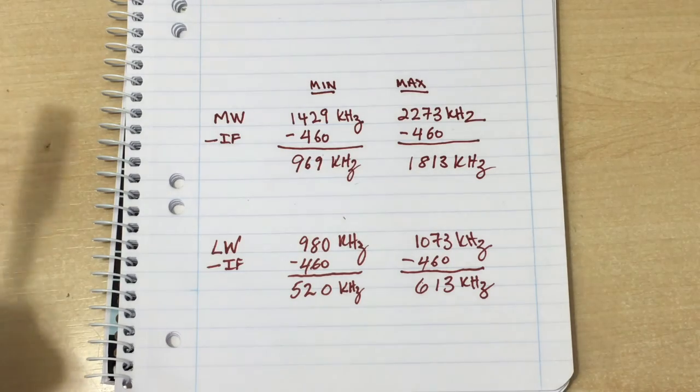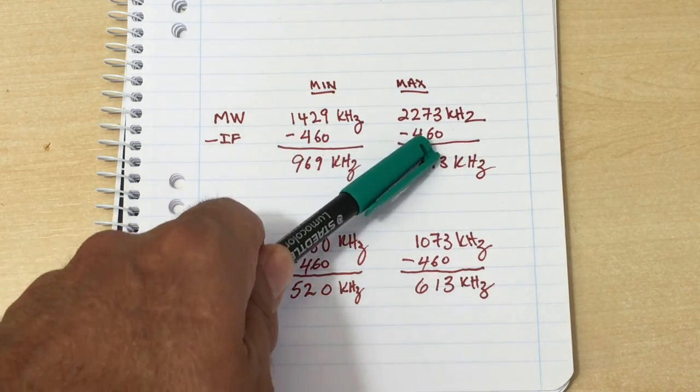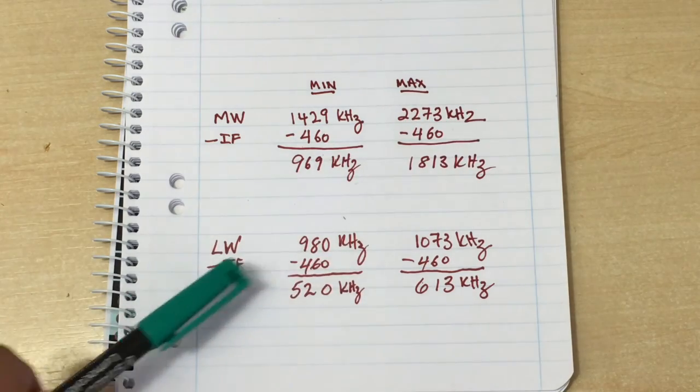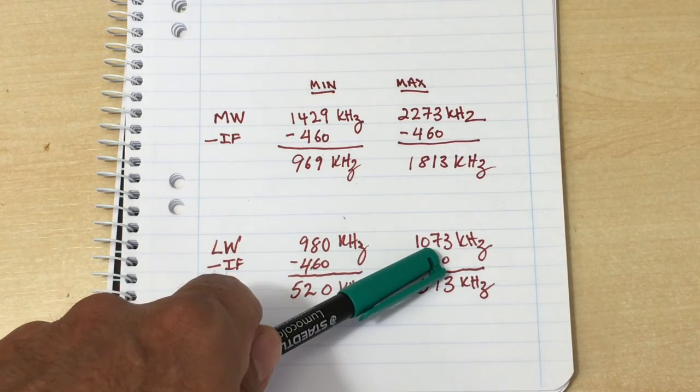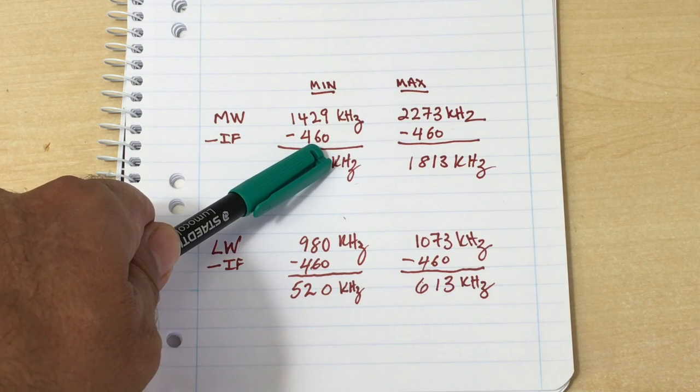This is what we've got. Medium wave minimum frequency 1429, maximum 2273. Long wave minimum 980, maximum 1073. I know that the IF is 460 kilohertz. So the oscillator frequency is above the tuned frequency by that amount.